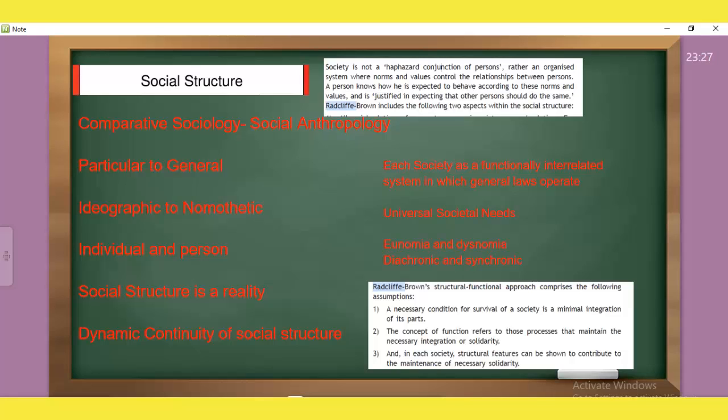Social Structure is an observable reality, and this Social Structure, there is no haphazard conjunction of persons. This is an organized system, which has values and norms, which are persons in relationship. A person knows how he is expected to behave, according to these norms and values, and he is justified in expecting that the other person should do the same. So A.R. Redcliffe Brown focused on structure. Functionalist would be the society structure and also the function. But A.R. Redcliffe Brown and Malinowski, the relationship between Malinowski and Redcliffe Brown, if we use functionalism, this is a particular mindset.